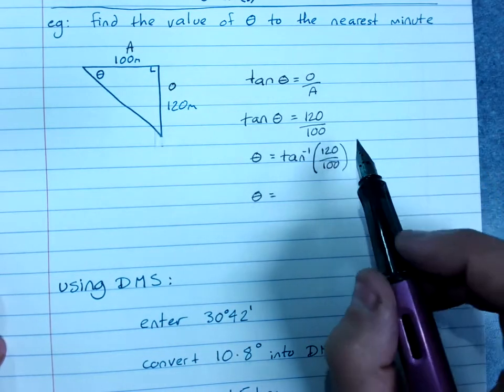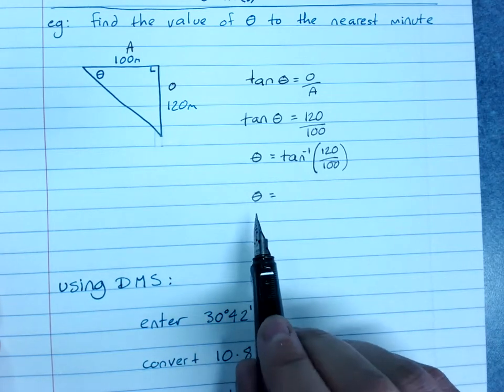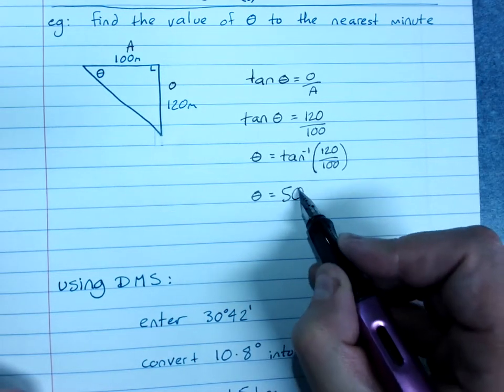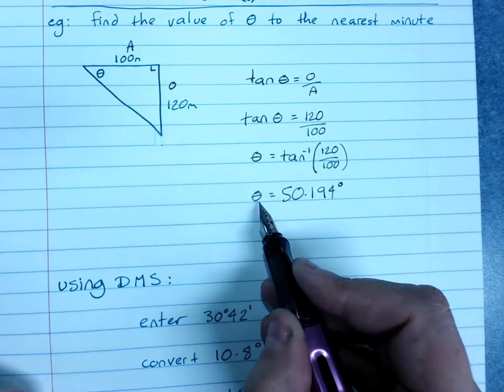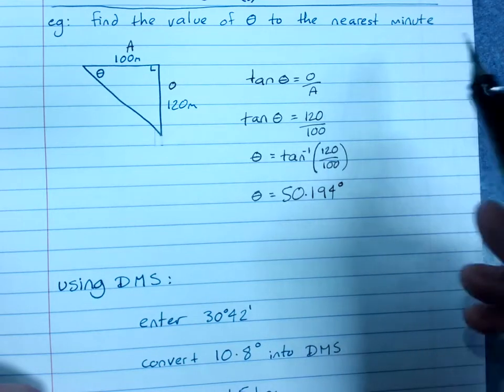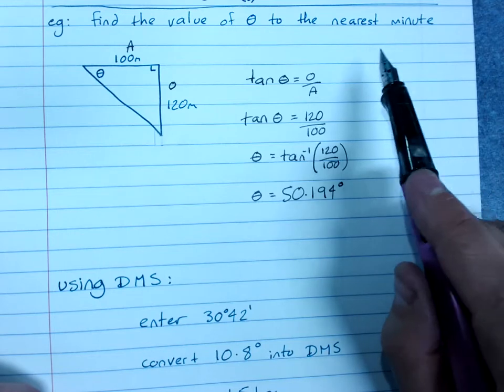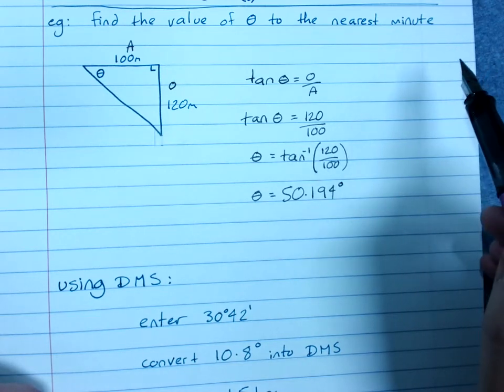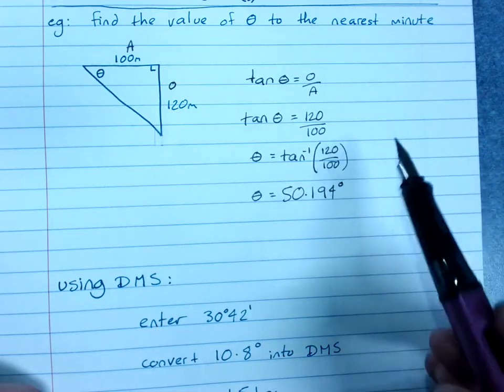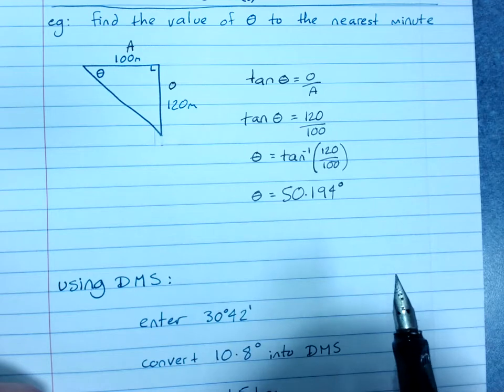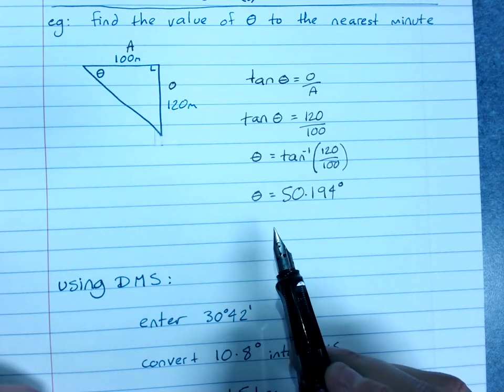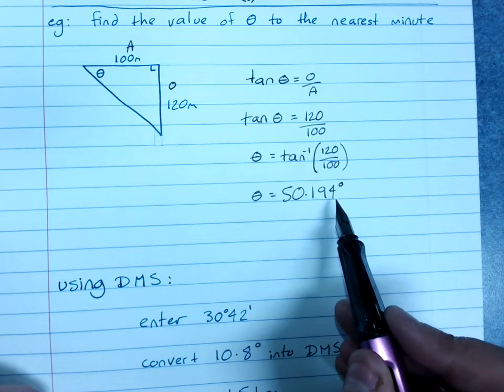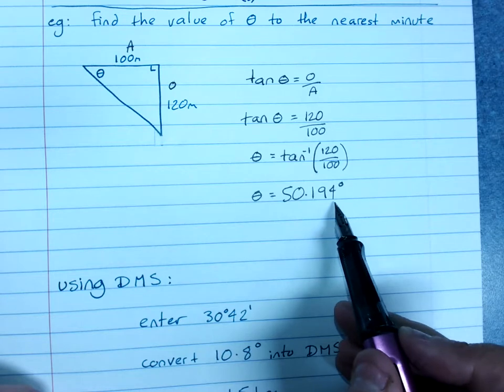And I've asked for the nearest minute. Now angles aren't usually measured in fractions or decimal points of a degree. I've got 50.194 degrees. Like time, angles are measured in degrees, but then parts of a degree are minutes, and parts of a minute are seconds. There's 60 seconds in a minute and 60 minutes in a degree. We won't ever ask you to do degrees, minutes and seconds in your answer at this stage, but degrees and minutes. This is approximately .2 of a degree, so 20% of a degree, and I know that a degree is 60 minutes.